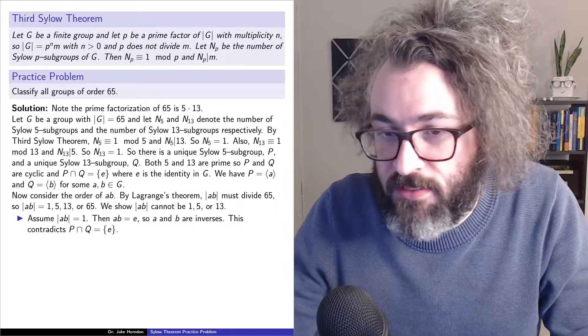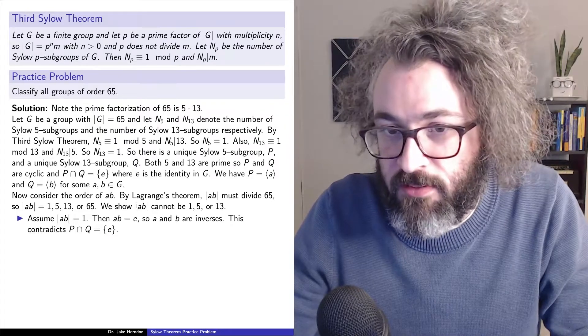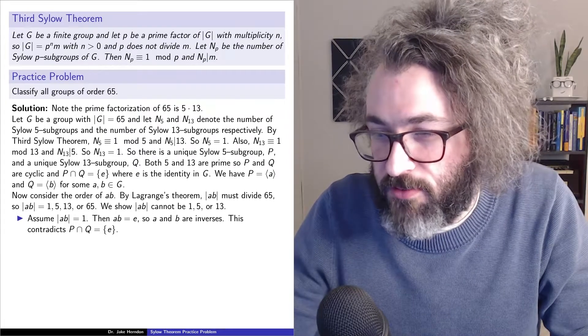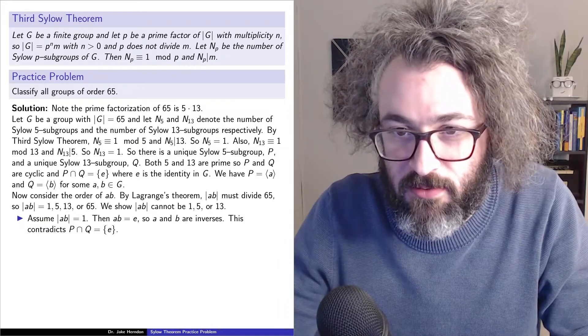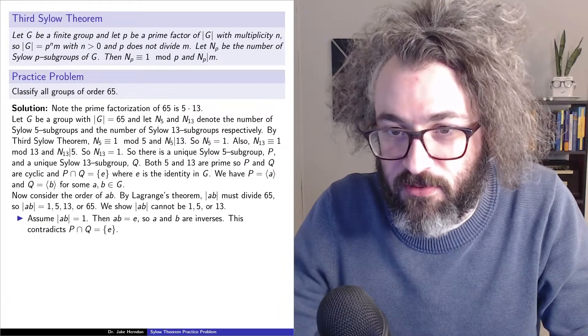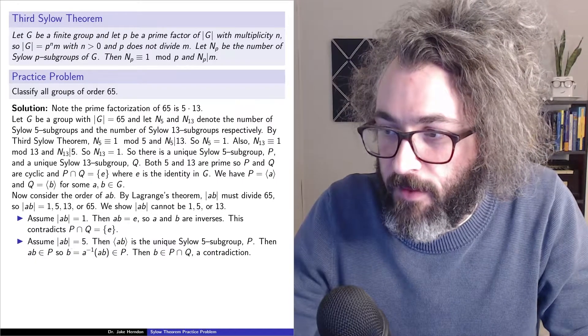A is in P, and b is in Q, and both P and Q are subgroups, so they're closed under inverses. So this contradicts that P and Q intersect trivially.